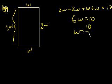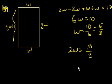W equals 10 over 6, which is equal to 5 over 3 feet. And so its dimensions are 5 over 3 and then the 2W, so the length is 2 times that, which is 10 over 3. So it's 10 over 3 by 5 over 3, and that's choice B.